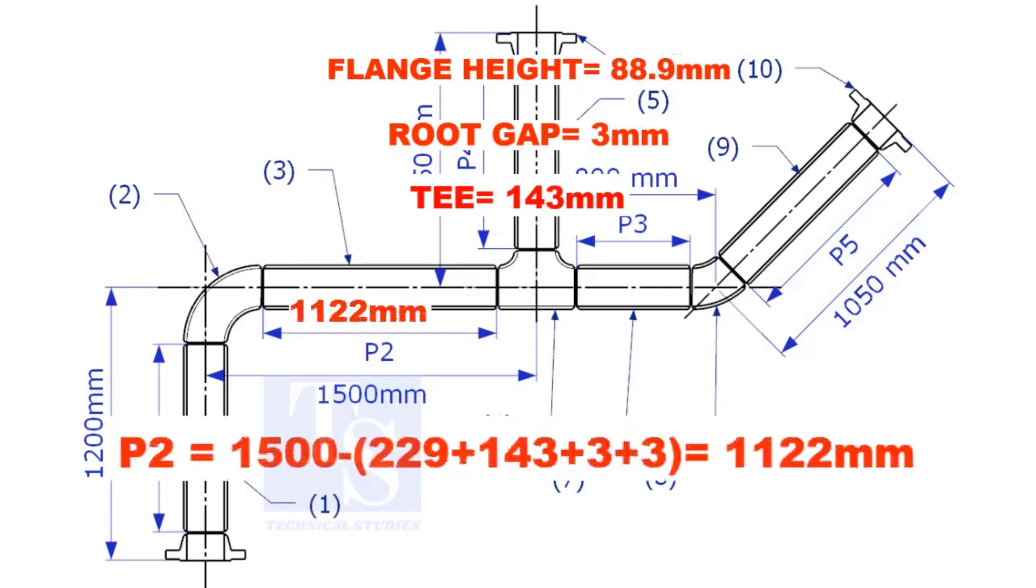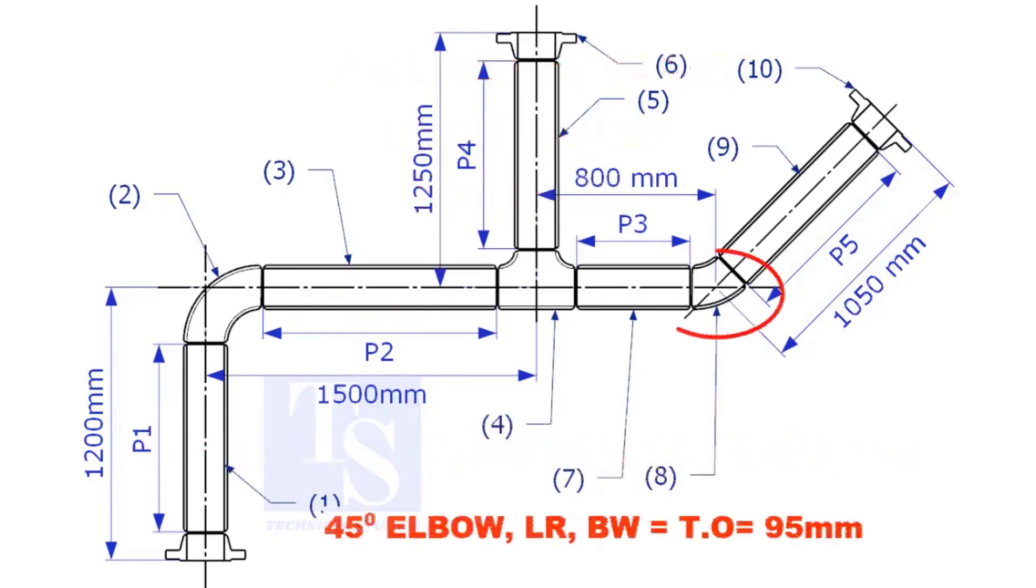The length of item number 3 is 1122mm. Takeoff length of the 45 degree elbow is 95mm.